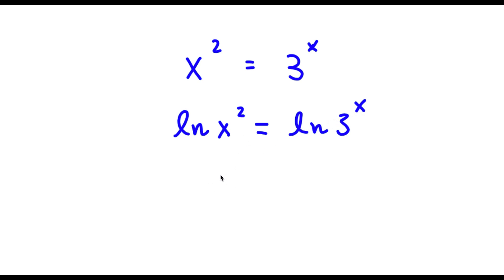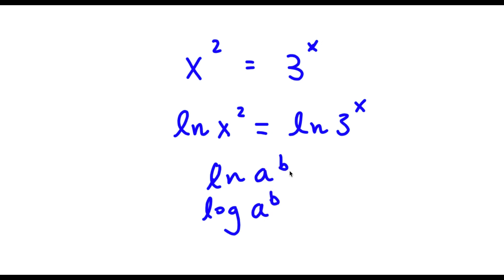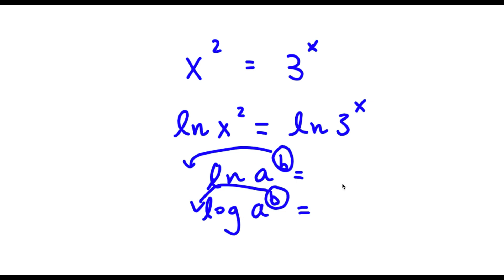An important property of logarithms is that if I take the natural log or even normal log of something in the form a to the power of b, I can actually move my exponent b to the front of the logarithm. So this is going to equal b times ln a, or b times log a.